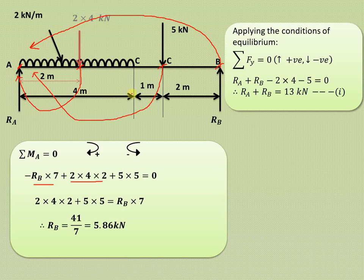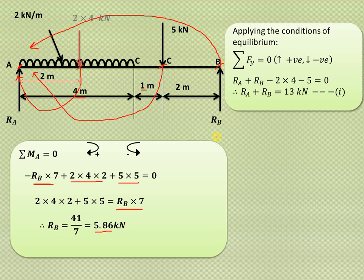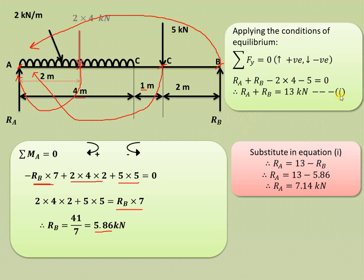Similarly, the 5 kN point load produces a clockwise moment about point A. The distance from the load to A is 4 plus 1 = 5 meters, so that term is 5 × 5, and the equation equals zero. Solving gives RB = 5.86 kN. Substituting into equation one, RA = 13 minus 5.86 = 7.14 kN. We have now obtained the reactions at A and B.